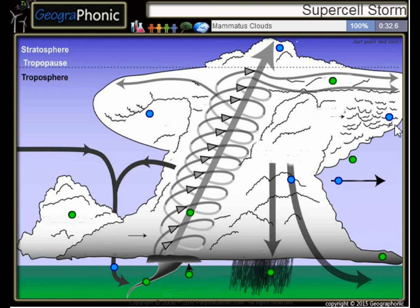These are mammatus clouds. Here we see a forward flank downdraft. This is an overshooting top in the stratosphere.